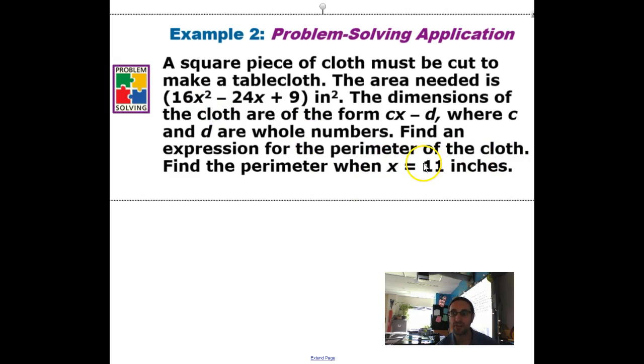Find an expression for the perimeter of the cloth. Find the perimeter when X is 11 inches. So here's the idea. Can I factor this? 16X squared, well that would be 4X. And 9 would be 3. And if I multiply that by 2, oh wait! 2 times 4X is 8X. 8X times 3 is 24X. That works. So literally, this term is, if I factor this out, if I take 16X squared minus 24X plus 9, I can factor this out.